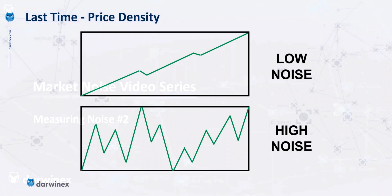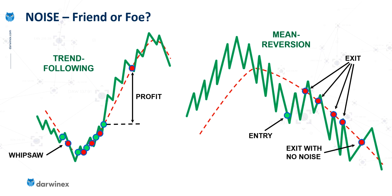If you watched the previous episode, you'll know how the whole concept of price density revolves around how much the price action is able to fill out a box. And when it does fill out that box, it means we have high levels of noise. Whereas if the price action is much smoother, going from one corner to another, it's an indication that we have low levels of noise. And we also considered the reasons why this is so important.